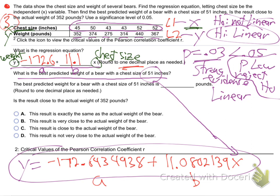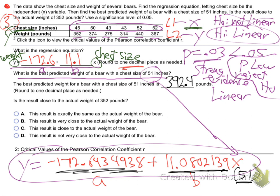If you multiply that all out — what do you get? 392.4. Thank you. So 392, and they said one decimal place. Anybody else getting that same thing? Good job, guys. So we plugged in 51 for X, and took negative 172.6434938 plus 11.0802139 times 51. And they got 392.4 pounds.